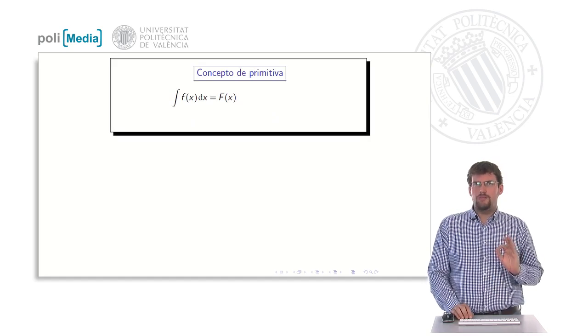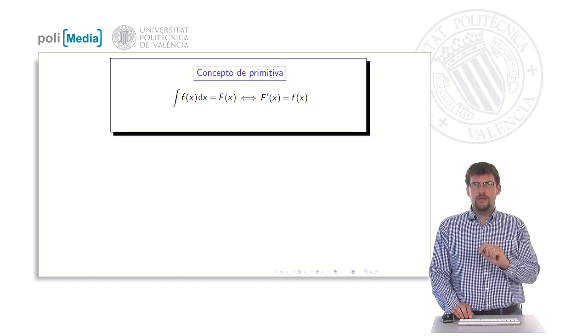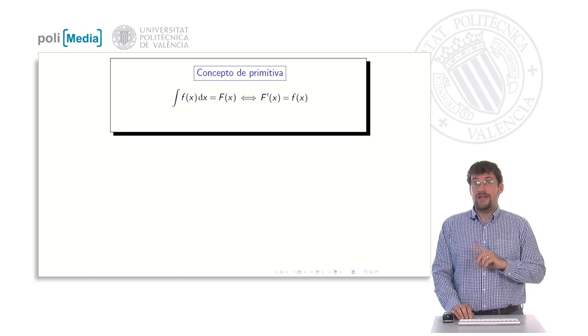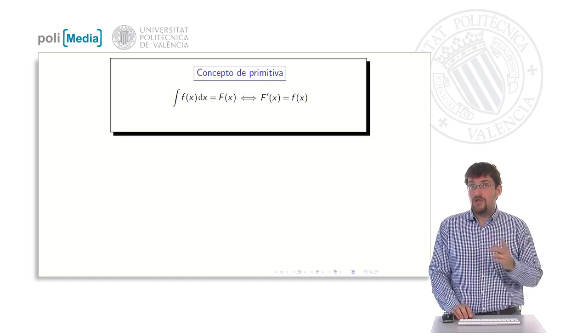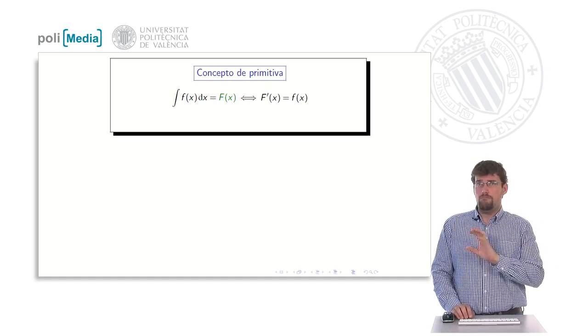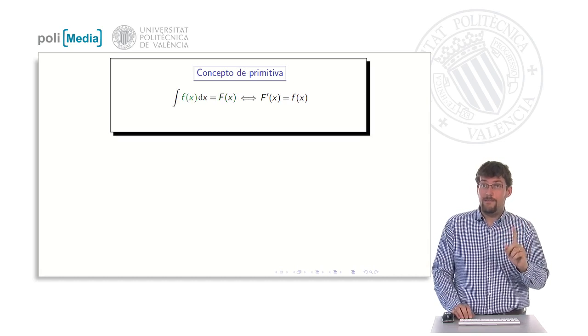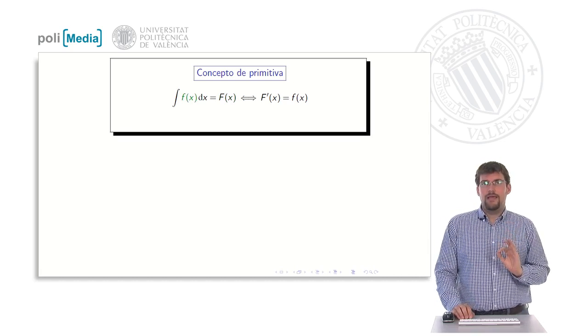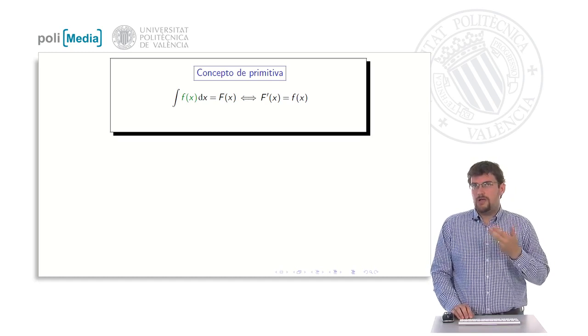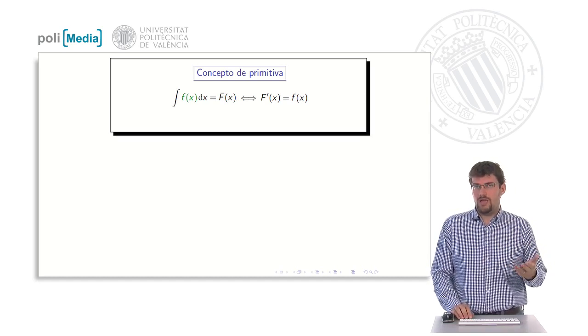We define the antiderivative of a function of small f as a function of uppercase F if and only if when we differentiate uppercase F, we obtain small f. Put in a different way, we go backward. If we take the uppercase F and we derive it, it must result in the small f. That is exactly the idea of an antiderivative. The set of all the primitives gives us the integral.